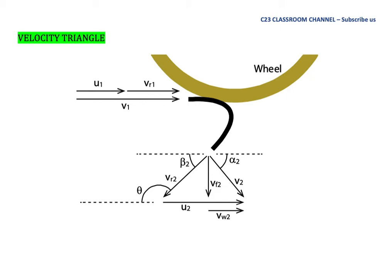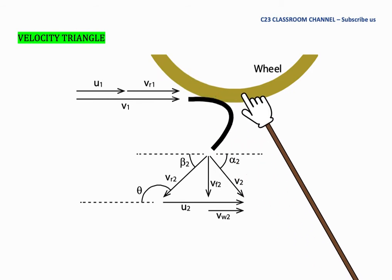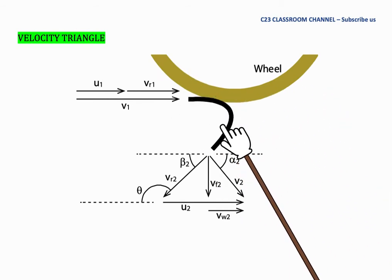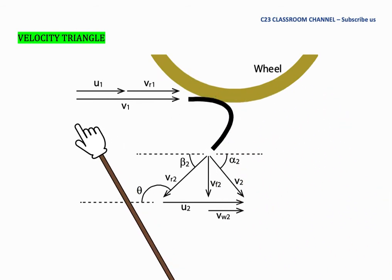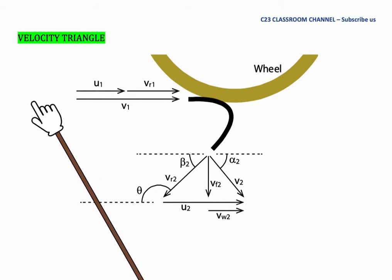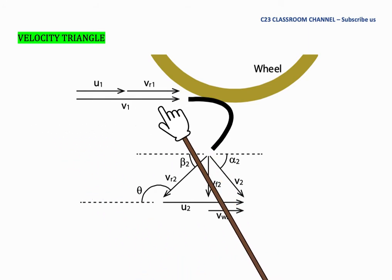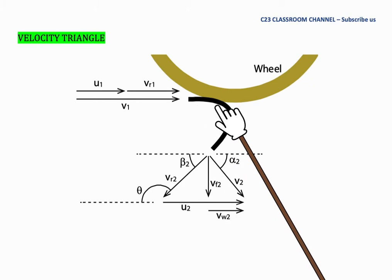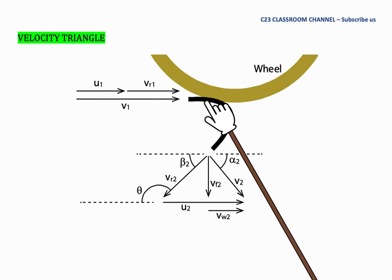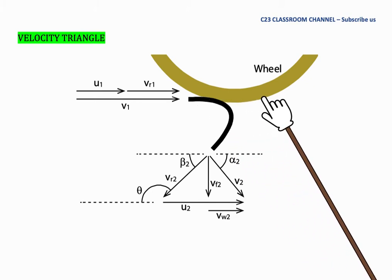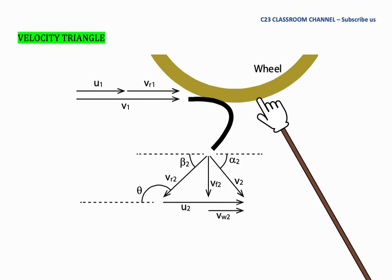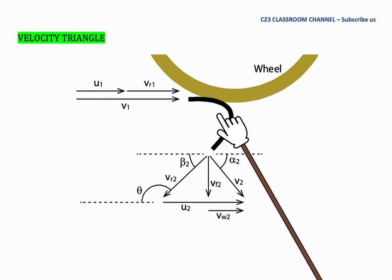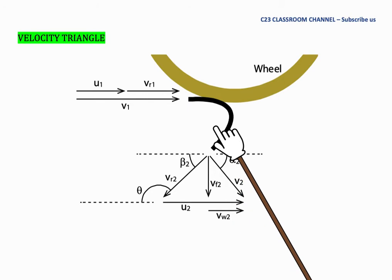Turbomachinery: Pelton Wheel. Today we will discuss velocity triangles in the Pelton Wheel. This is the Pelton Wheel and this is the bucket. We imagine a water jet flowing from left to right. The water jet hits the bucket, causing the bucket to rotate counterclockwise, and the water falls down vertically.